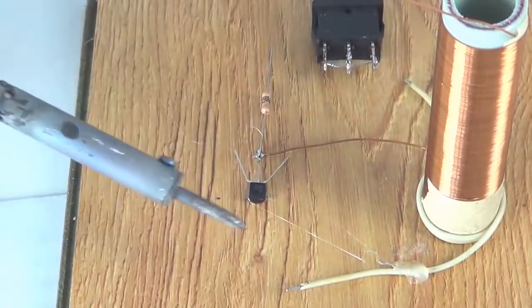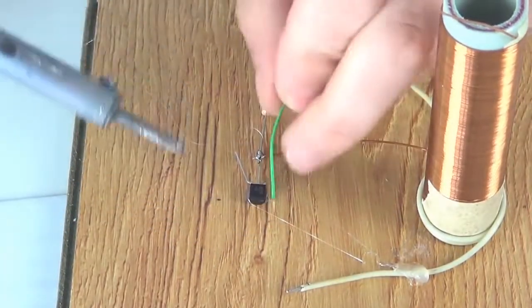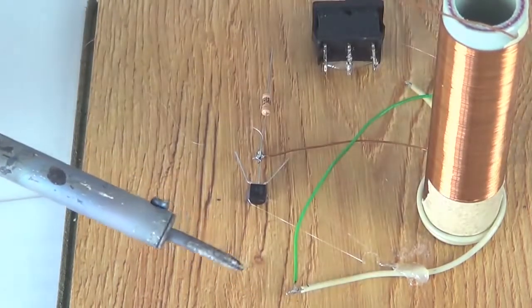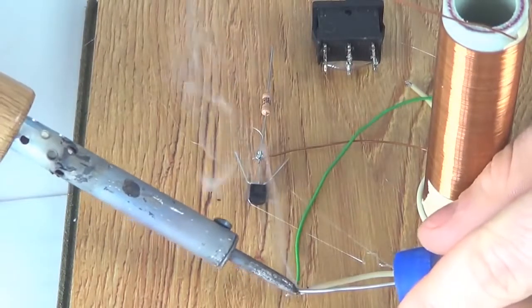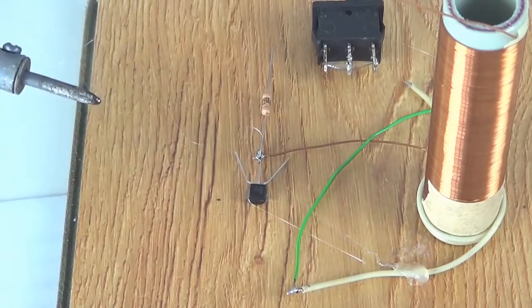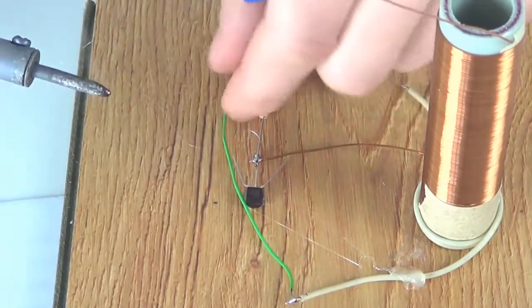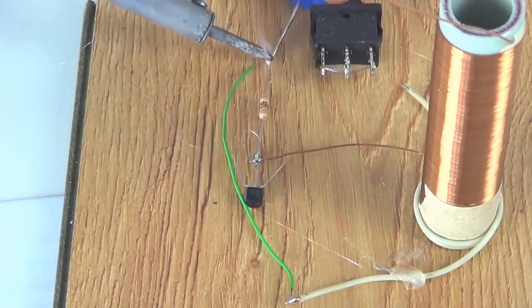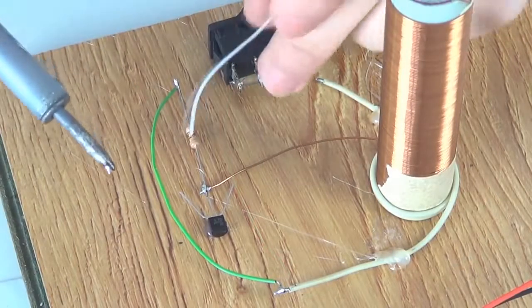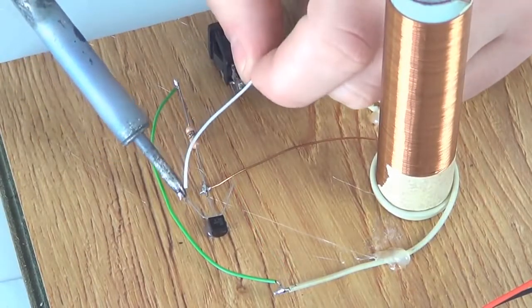Solder the upper end of the secondary spool to the resistor, and then we solder another end of the secondary spool to the right contact of the transistor.